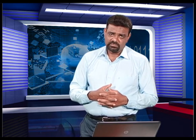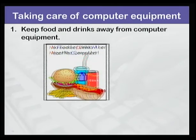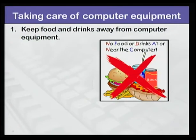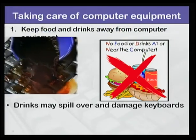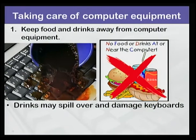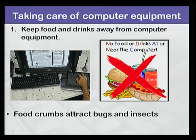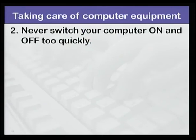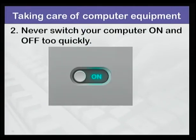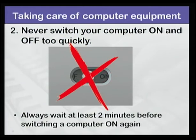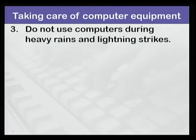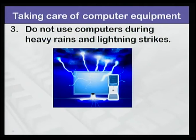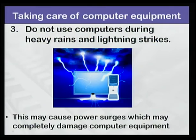I hope you got all your answers correct. Now we come to part two of this lesson. I am going to give you some guidelines on how to take proper care of computer equipment. Firstly, keep food and drinks away from computer equipment, because drinks may spill and damage keyboards, and food crumbs attract bugs and insects. Number two, never switch your computer on and off too quickly — always wait at least two minutes before switching a computer on again. Number three, do not use computers during heavy rains and lightning strikes, as this may cause power surges which may completely damage computer equipment.